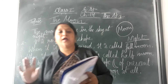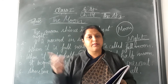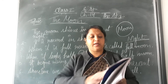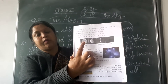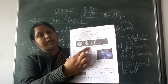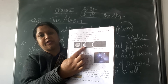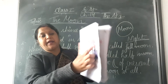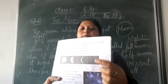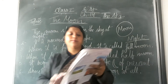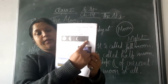Aur yeh hamesha round nahi dikhega. Iska akar kya hota hai? Change hoti rehta hai. When it is full round, it is called full moon. See in your book — full round, it is called full moon. When it is half in shape, it is called half moon. See the picture. Sometimes we do not see the moon — kabhi kabhi amko moon bilkul nahi dikhta hai.